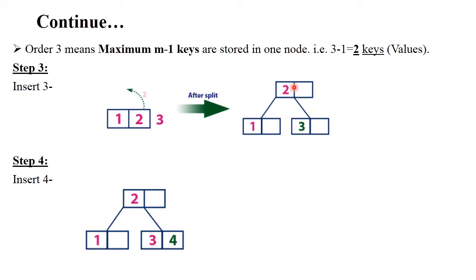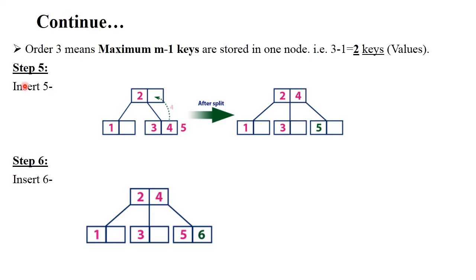When overflow occurs, you need to split. Splitting means the middle node becomes the root node. Next, insert 4: we insert 4 after 3 sequentially. Next, insert 5: we insert 5 after 4, but it becomes overflow because one node can store a maximum of two values. So the middle node — 4 — goes up as the parent node. Now the tree has 2 and 4 as parent nodes, with 1, 3, and 5 as leaf nodes.